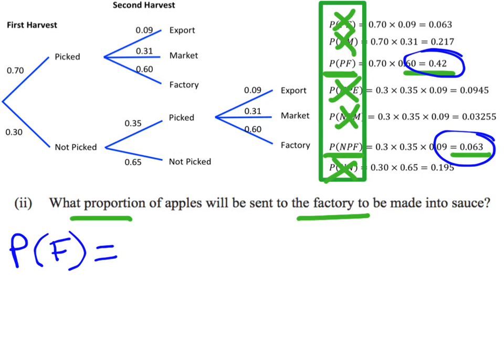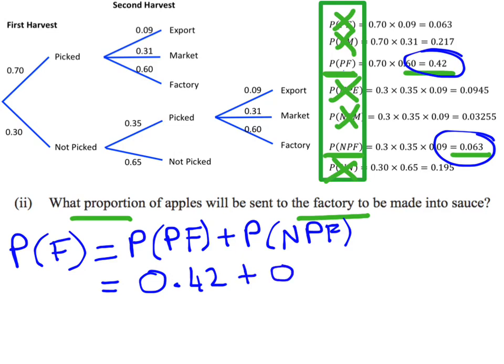I could either get it picked and go to the factory, or I could be picked in the second harvest and then go to the factory. So the apple could be picked in the first harvest and then go to the factory. Notice how I put a plus down - in probability, OR means plus. Or it could be not picked the first harvest, picked the second one, and then go on to the factory. So that's going to be my 0.42 plus my 0.063, and that will give me a probability of 0.483.